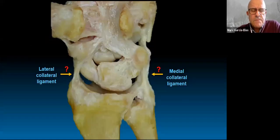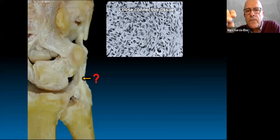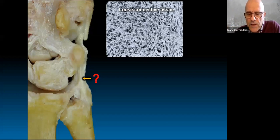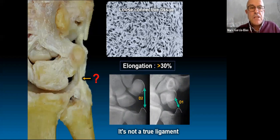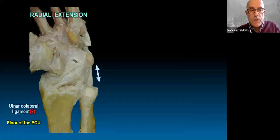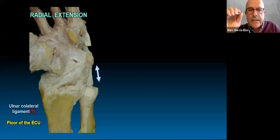What about collateral ligaments? There has been controversy about whether those are truly ligaments. From a histological perspective, there is a crisscross network of fibers with many cells — this is loose connective tissue that may allow elongation of 30% or more, so it cannot be a true ligament. But that doesn't mean it's unimportant. The ulnar collateral ligament functions as the floor of the sixth compartment, and in radial extension — the extreme of dart throwing — it acts functionally as a ligament. The same can be said of the radial collateral ligament, sometimes called the radial scaphoid ligament, which controls that position at the end of dart throwing rotation.